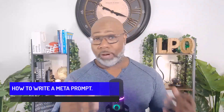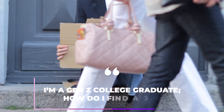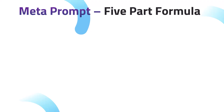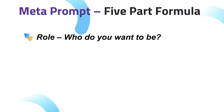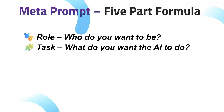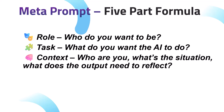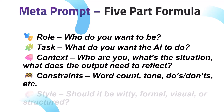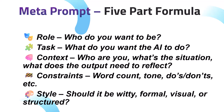Next, we have how to write a Meta-Prompt. Let's transform a basic prompt — 'I'm a Gen Z college graduate, how do I find a job?' — into a Meta-Prompt using a five-part formula. First is the role: who do we want the AI to be? Second is the task: what do we want the AI to do? Third is context: who are you, what's the situation, what does your output need to reflect? Fourth is constraints: word count, tone, do's and don'ts, etc. And fifth is style: should it be witty, formal, visual, or structured?